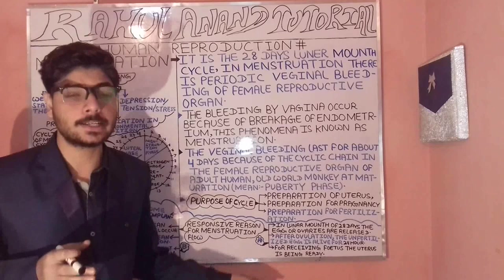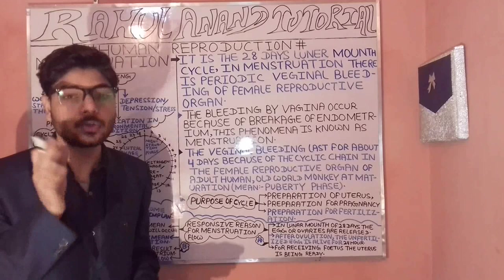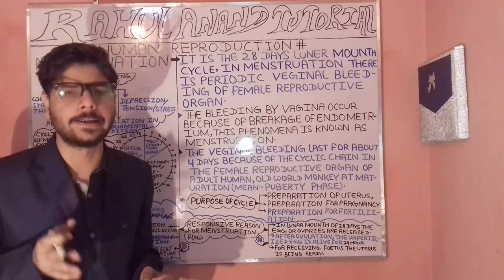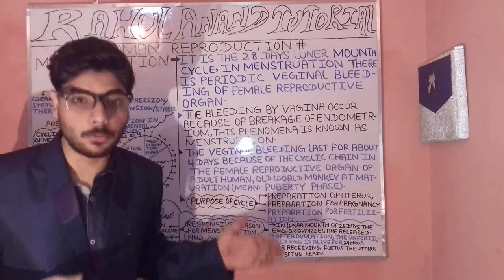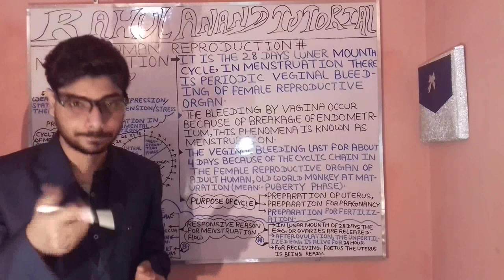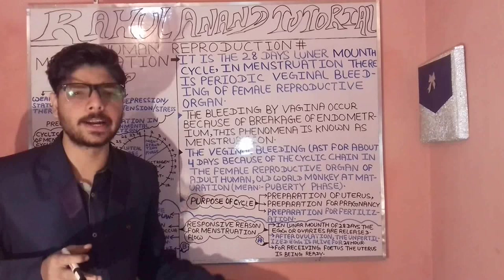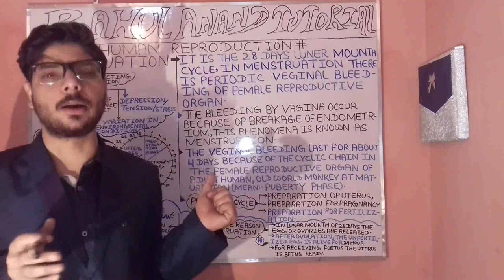In the 28-day lunar month, an egg is released through ovulation. After ovulation, the unfertilized egg is alive for 24 hours. The uterus is being prepared for receiving the foetus, involving parts such as the endometrium, perimetrium, and mesometrium.